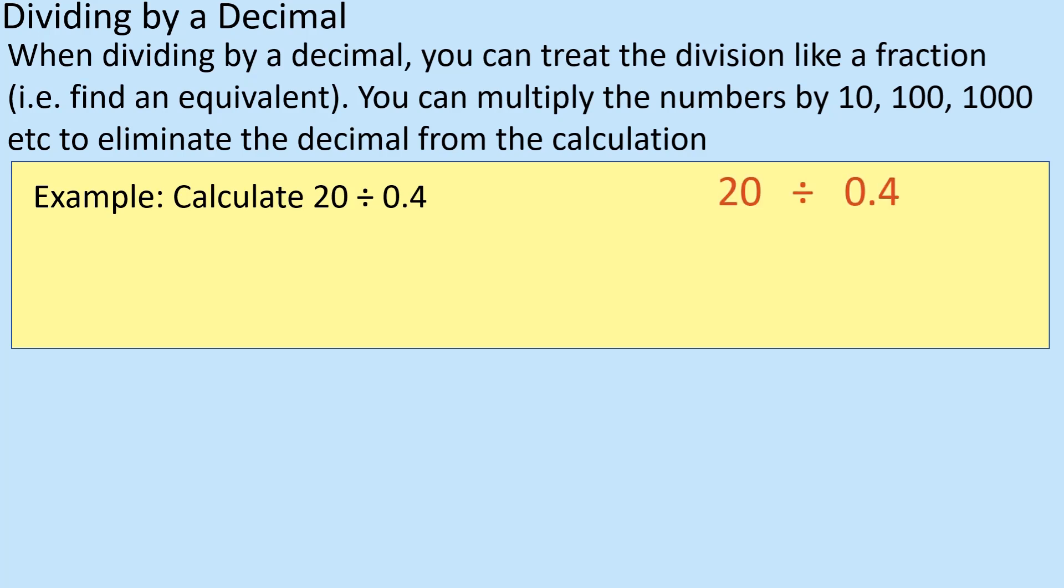So when I do 20 divided by 0.4, if I write that as a fraction, essentially it's 20 divided by 0.4. Well if I times them both by 10, that is a little bit like you would do a fraction. As long as you do the same to the top and the bottom, it's okay. So that's the same as 200 divided by 4.